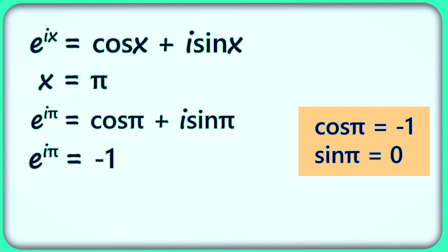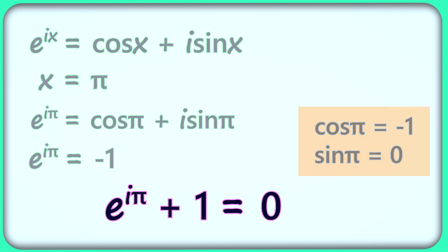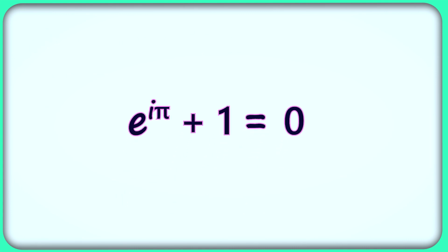So the final form is e raised to i pi equal to negative 1. And let's add plus 1 on both sides. Now we get the equation in the form e raised to i pi plus 1 equal to 0, which is nothing but the most beautiful mathematical equation.